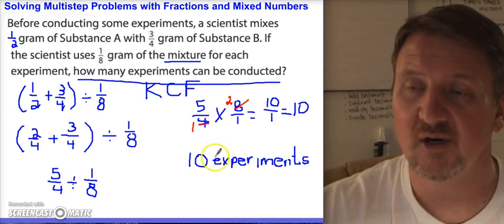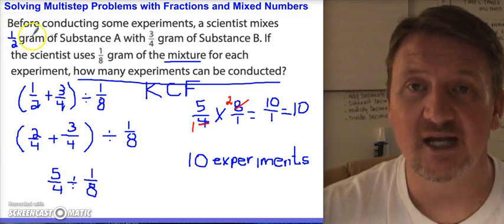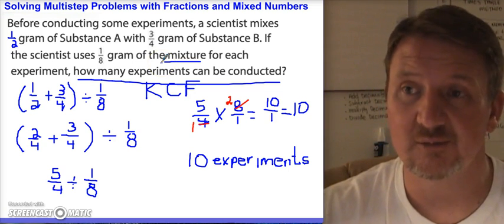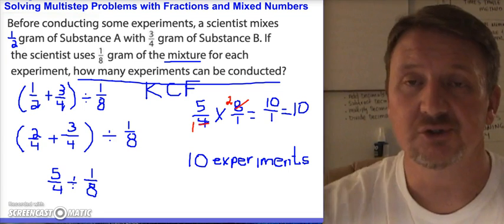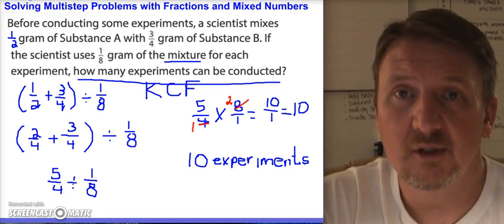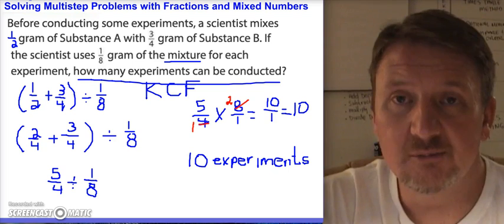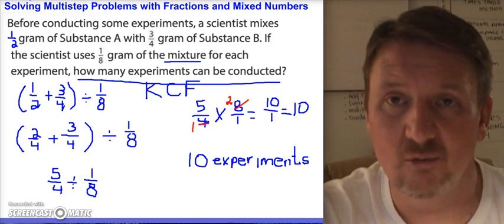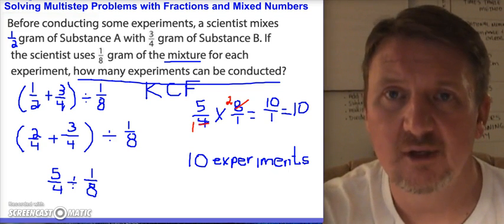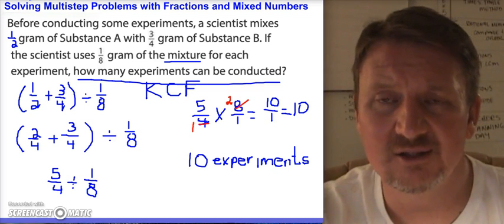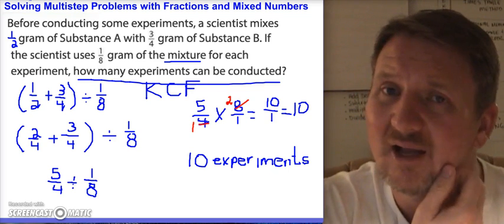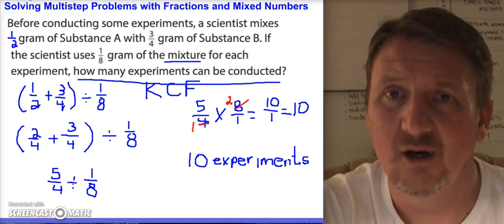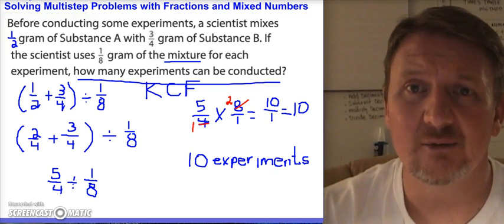Ten experiments can be conducted with this combined mixture using one-eighth gram of each of the substances. So that's all you have to do — read your problem, figure out what's important. You can't just start taking the numbers and adding, dividing, or subtracting them; that's not always going to work. In these two problems we combined two numbers and then divided the sum by another number, but that's not always going to be the case. You have to read and actually try to understand what the problem is asking you. Make sure you answer the questions and I will see you guys at school.